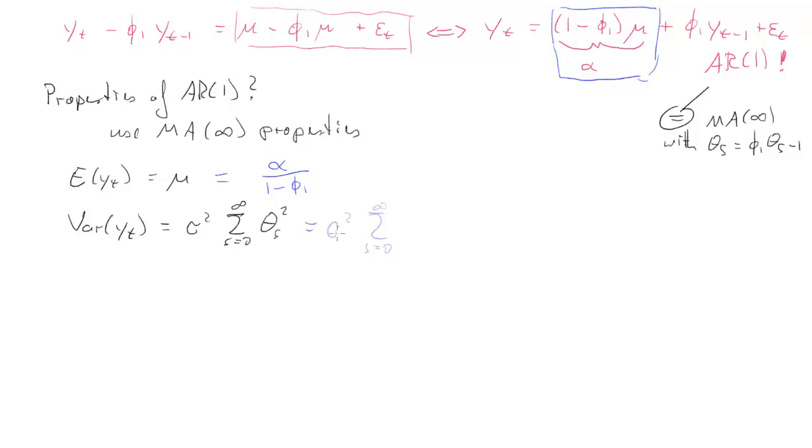What about the variance? That was our variance equation for the infinite MA process. Now, we replace the theta s with our phi 1 to the power s. And we get this. Let us write out the sum. And then we can see more clearly. We have sigma squared times 1 plus phi 1 squared plus phi 1 to the 4 and so forth. We just have even powers. And you may remember from maths that this is just the same as sigma squared times 1 over 1 minus phi 1 squared if the absolute value of phi 1 is smaller than 1.